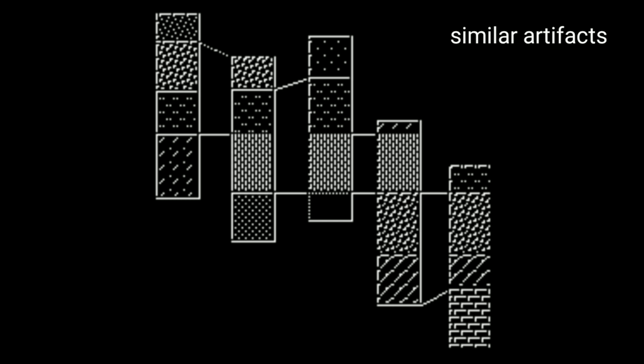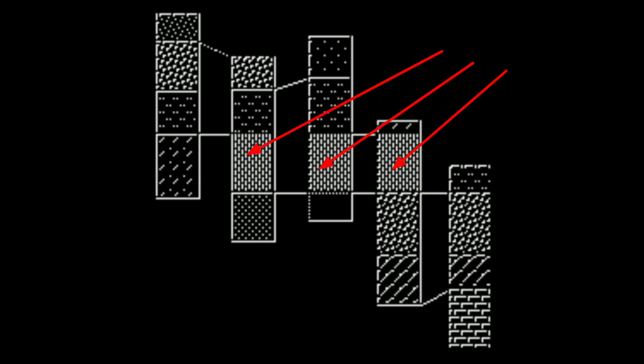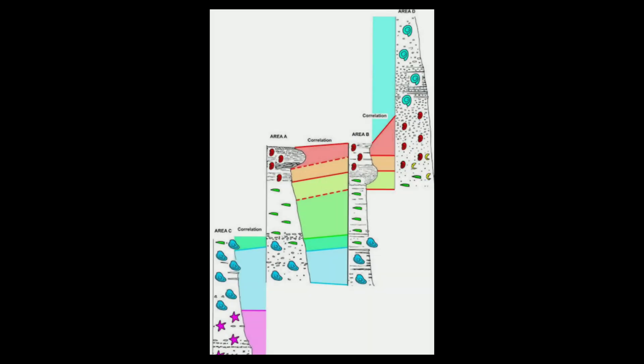When certain types of artifacts — for example, coins, pottery, or arrowheads — with known chronology are found in different sites, those sites are considered roughly the same age according to cross dating. A specialized form of cross dating using animal and plant fossils is known as biostratigraphy.